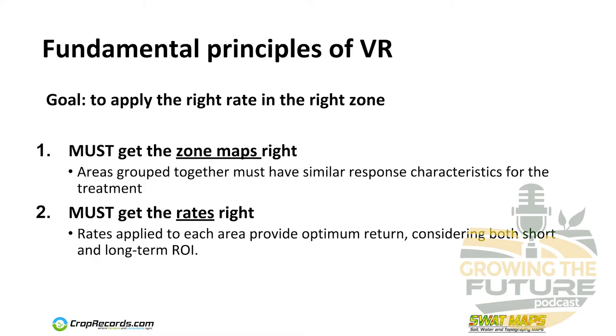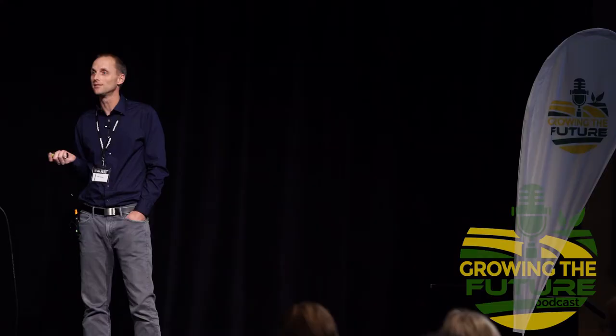How do we start mapping those stable factors? It's not necessarily easy, but I'm going to try and explain it in a way that makes sense, and hopefully we'll get through it by the end.